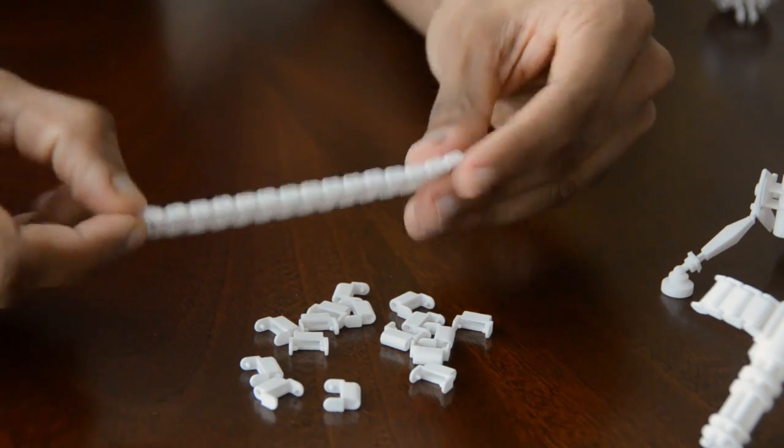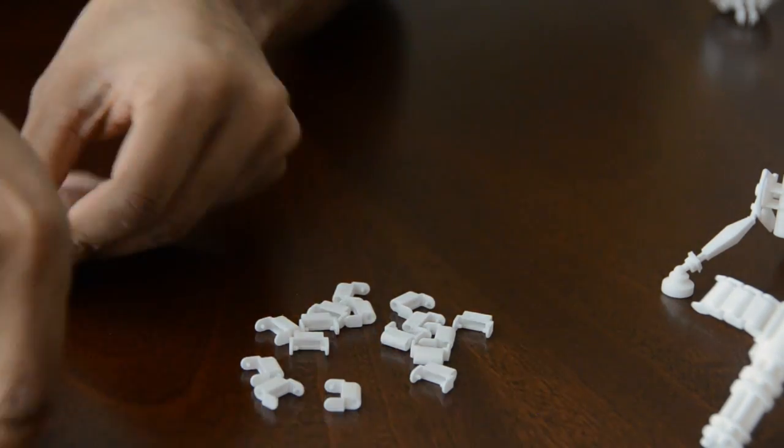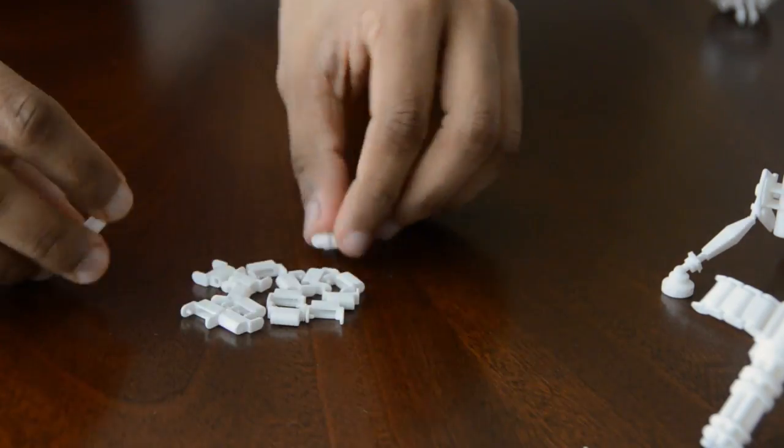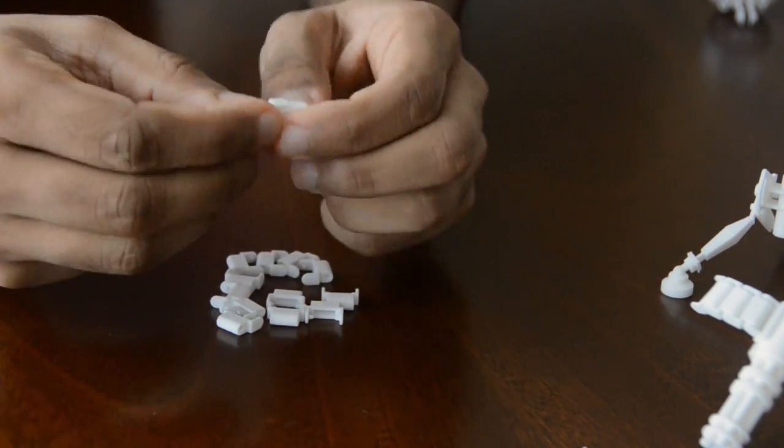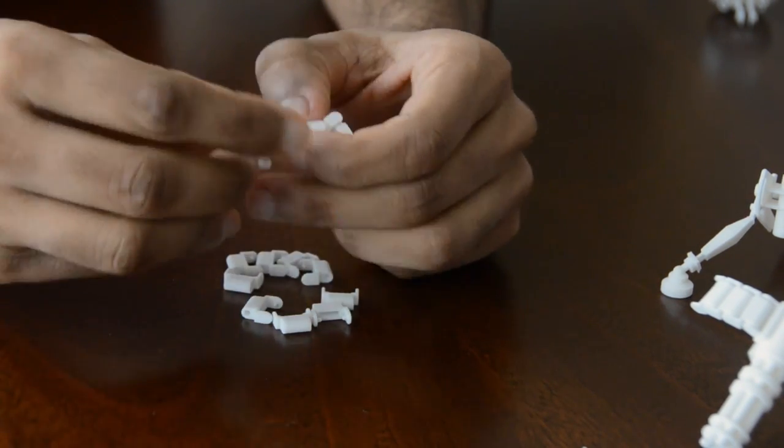Once you've assembled a chain of 16, you should have something like you can see in the video, a chain that moves quite freely. This forms one of the bullet chains, so you will need to do the same with the remaining 16 pieces to form the second one.